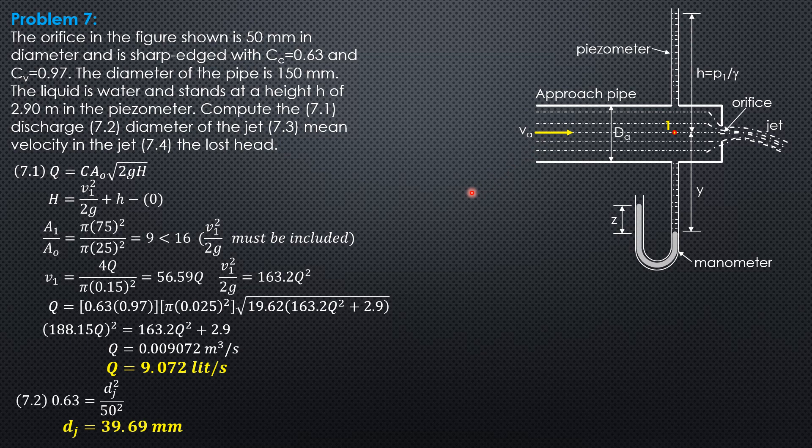For mean velocity in the jet, that is C_v√(2gH), where H is 163.2Q² plus 2.9. So V equals 0.97√(19.62 × H), which is 0.97√(19.62 × (163.2 × (0.009072)² + 2.9)). The mean velocity in the jet is 7.334 meters per second.